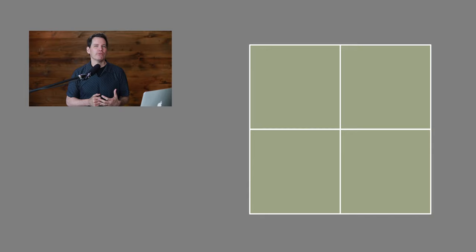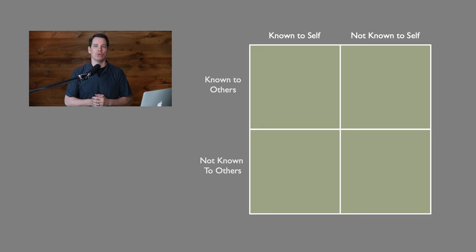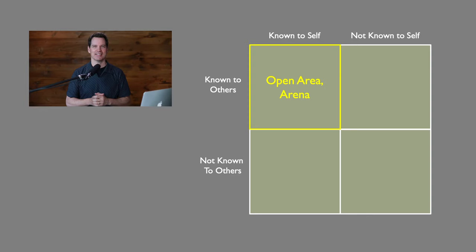It's a two-by-two model that gives us four squares. Some people call them windows, like the name of the model, which is a nice metaphor because these are windows into what makes you tick. On the x-axis, we have what we know about ourselves and don't know about ourselves. On the y-axis, we have what's known to others and not known to others about us. The squares are each different sizes depending upon the individual — it all depends on how well you know yourself and how well others know you.